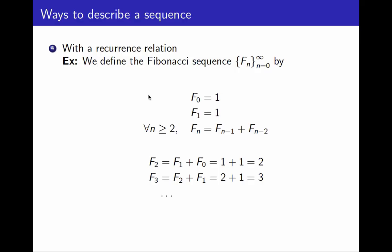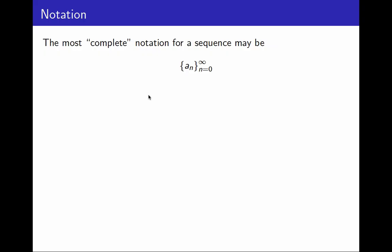An important note on notation. Perhaps the most complete notation for a sequence may be something like this. I write a sub n between curly braces, and I say that n goes from 0 to infinity. That's how it will rate those indices. That tells me what the variable is, and reminds me that it starts at 0, and it keeps on going forever.